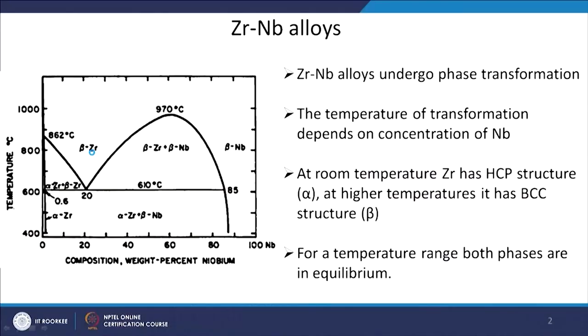This work is on zirconium-niobium alloys — these are structural materials for nuclear plants. Zirconium-niobium tubes are present in nuclear power plants where the fuel bundles are kept. The processing of these alloys is one of the main issues we were trying to understand, and one phase diagram is shown here for zirconium-niobium alloys.